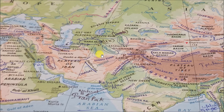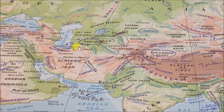Now we will come to Iran. In Iran, you will find three important mountains. First is Mount Damavand, which is an extinct volcano. Below it are the Elburs Mountain and the Zagros Mountain. So Mount Damavand, Elburs Mountain, and Zagros Mountain — these three are all in Iran.